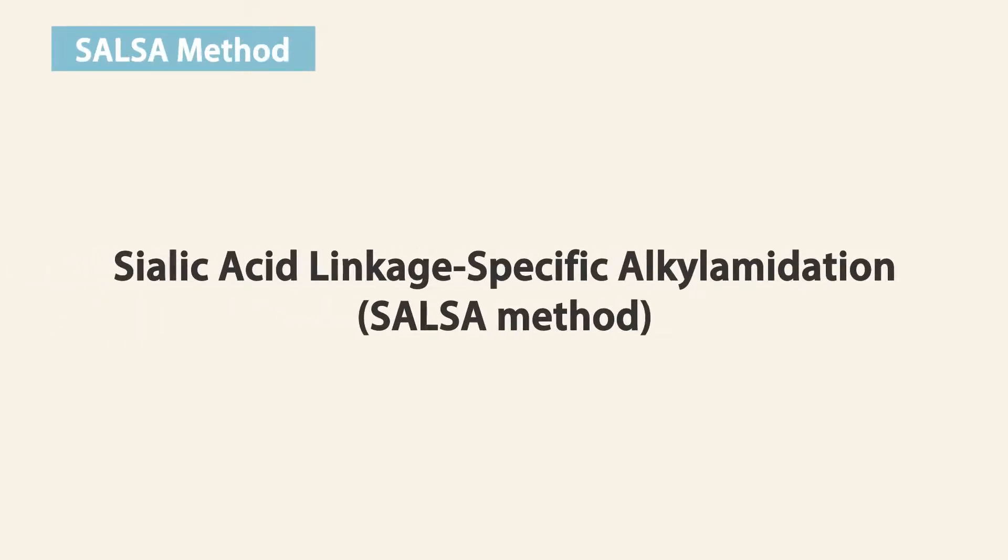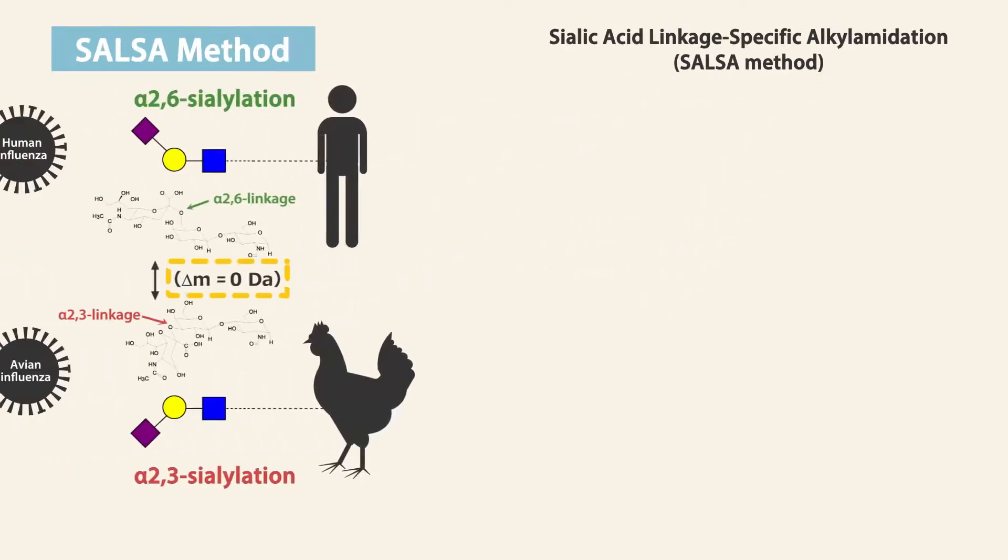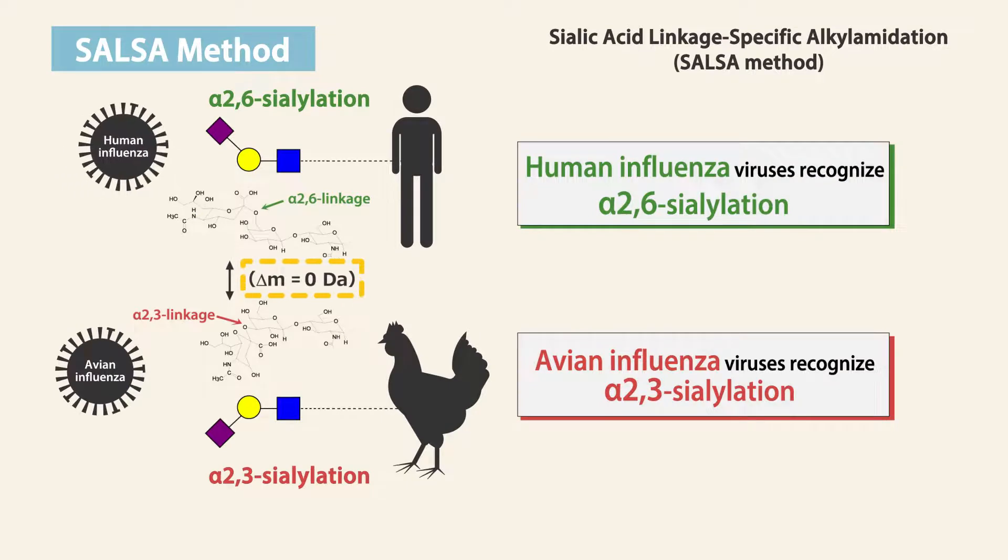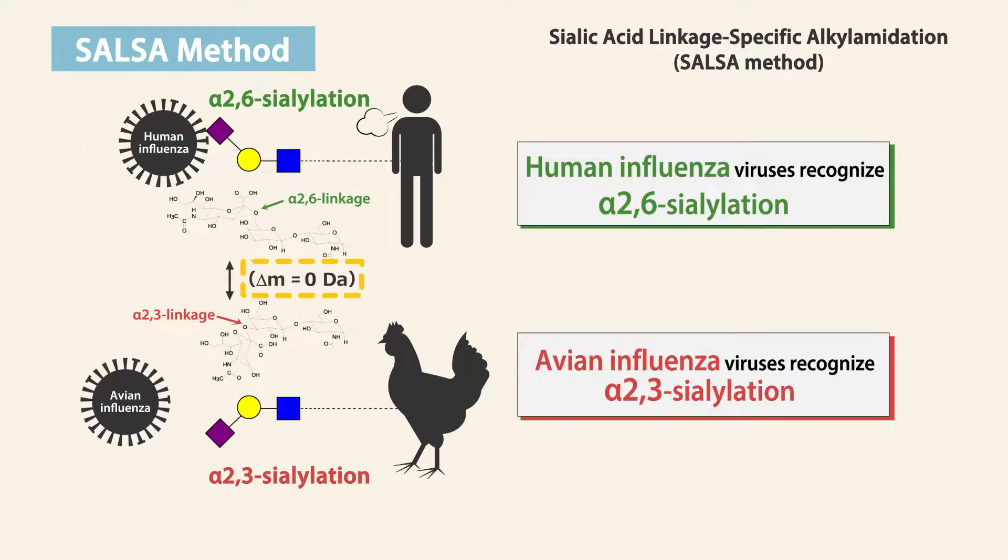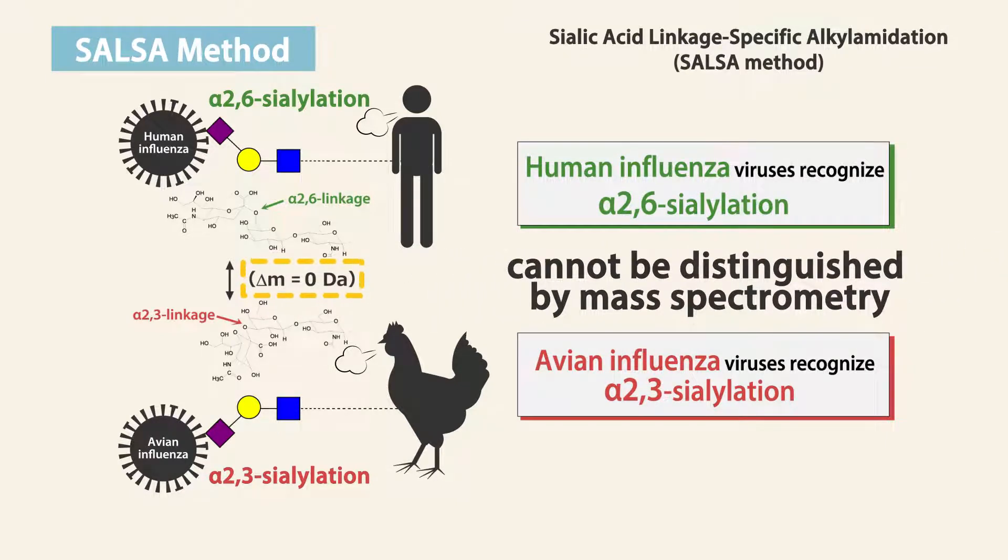SALSA method: Sialic acids, which are related to various biological phenomena, have variations in linkage to glycan core. Those variants cannot be distinguished by a mass spectrometric technique, because there are no differences in mass.